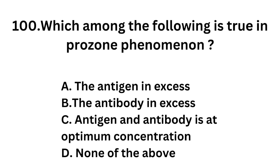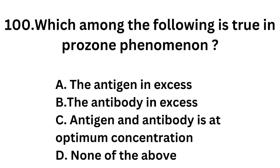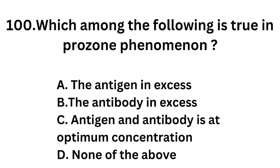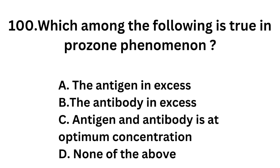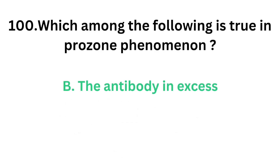Question number 100. Which among the following is true in the prozone phenomenon? Option A. The antigen is in excess, option B. The antibody is in excess, option C. Antigen and antibody are at optimum concentration, option D. None of the above. The correct answer is option B, the antibody is in excess. In the prozone phenomenon, the antibody is in excess.